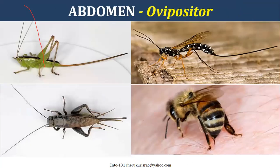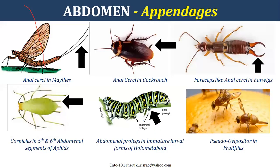You can see different kinds of ovipositors — the egg-laying instrument. Parasitic hymenopterans have a big ovipositor. You can also see ovipositors in honeybees and grasshoppers. There are also other modifications in the last abdominal segments — cerci in mayflies and cockroaches, and forceps-like structures in some insects.